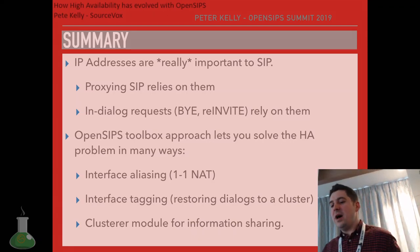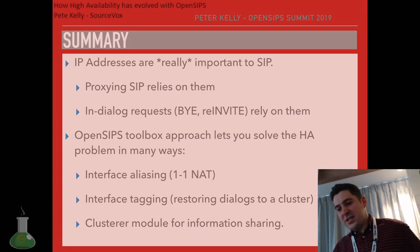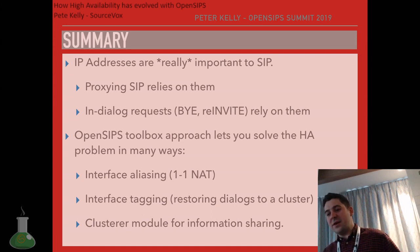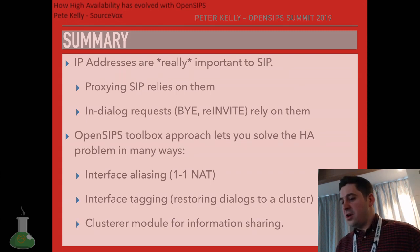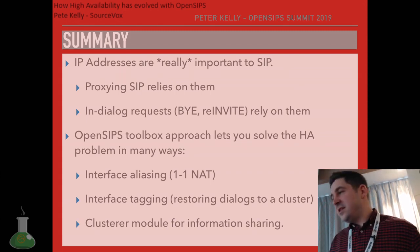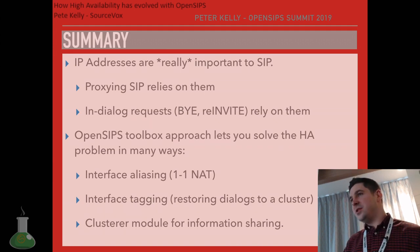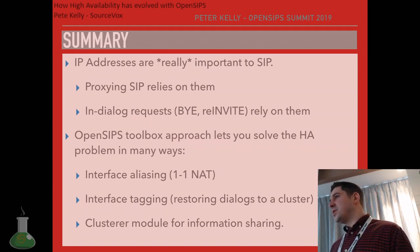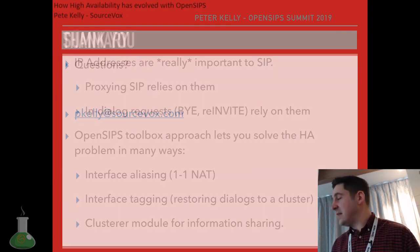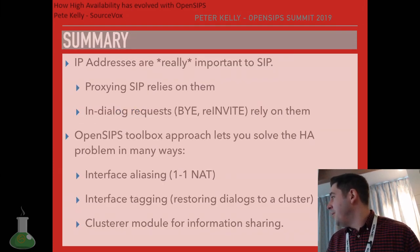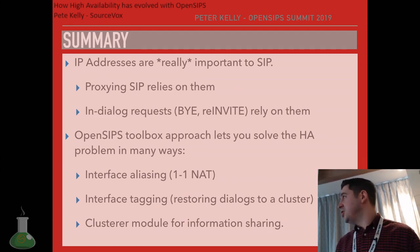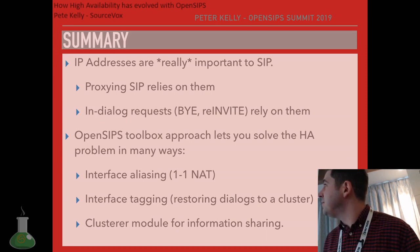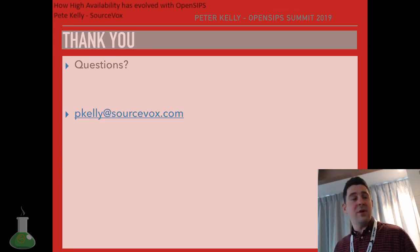To summarize: IP addresses are really important in SIP proxying — SIP relies on them. The OpenSIPs toolbox approach lets you solve the high availability problem in many ways. We now have interface aliasing with OpenSIPs 3 which allows an OpenSIPs cluster in a one-to-one NAT or cloud scenario, and we have the cluster module that you can use in any situation for information sharing. Well, that's it — any questions?